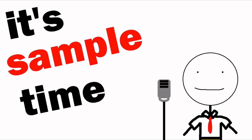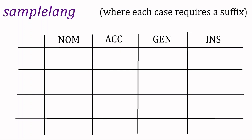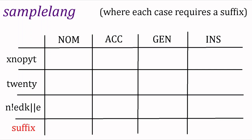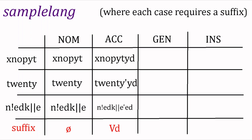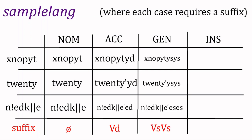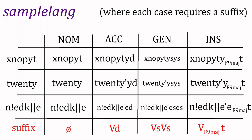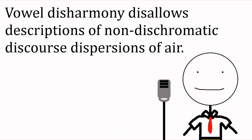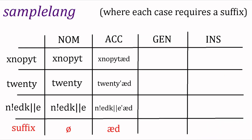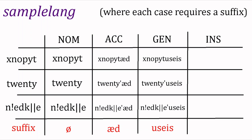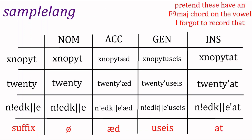It's sample time. Let there be a language with a few cases and endings, and here are some words: Knoppet, Twenty. If we had vowel harmony, endings might be null for nominative, vowel-D for accusative, vowel-S vowel-S for genitive, vowel-F9 major chord T for instrumental, etc. But vowel disharmony requires these vowels to be specified. So let's change that to AD for accusative, OUSACE for genitive, and AT for instrumental.